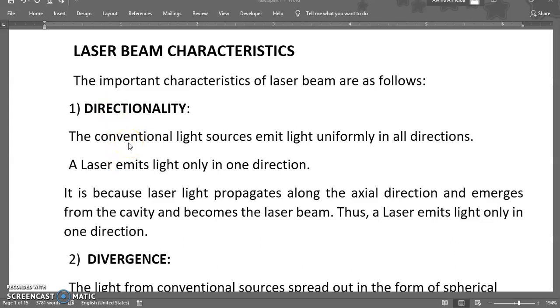A conventional light source, for example bulb or tube light, emits light uniformly in all directions. A laser emits light only in one direction. It is because the laser light propagates along the axial direction and emerges from the cylindrical resonant cavity and becomes a laser beam. Thus, a laser emits light only in one direction.